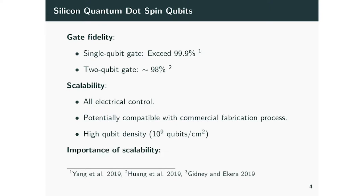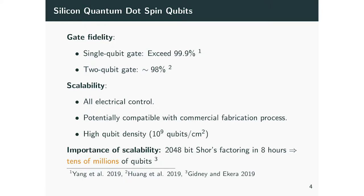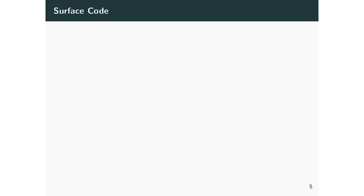Why is scalability important? It's because of the sheer number of qubits we need to perform fault-tolerant quantum computation. For example, to factor a 2,000-bit number using Shor's algorithm in eight hours, a recent paper from Gidney and Ekerå shows that you need tens of millions of qubits. So the most practical way nowadays when we try to scale up a qubit platform is, of course, surface code, mainly because it has a high threshold and a 2D layout.